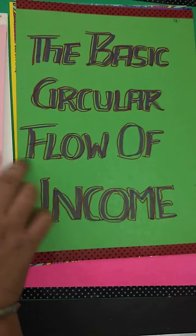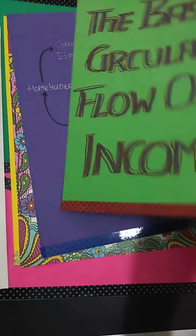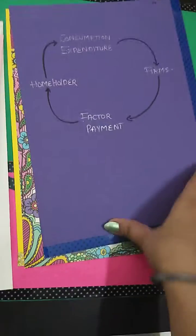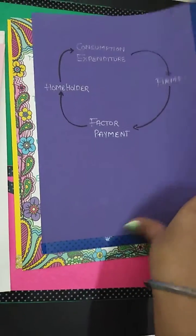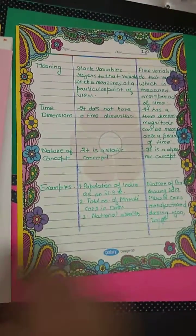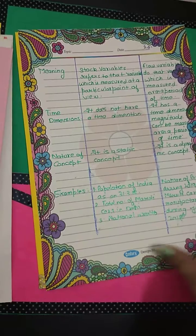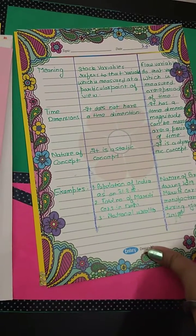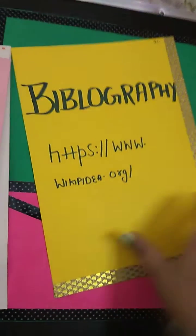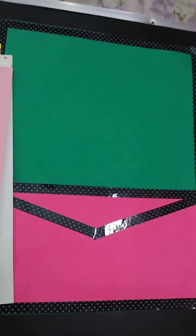Then the basic circular flow of income, and the last page is the bibliography.